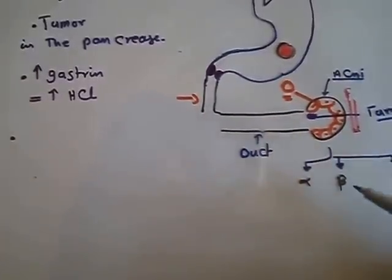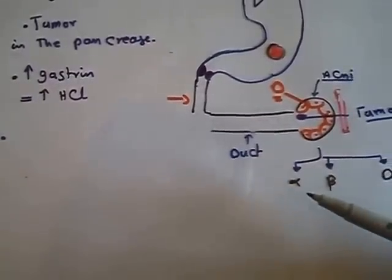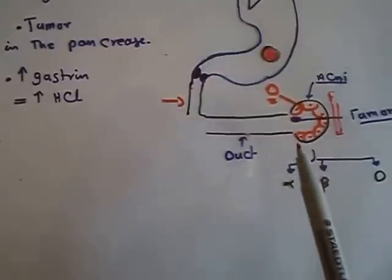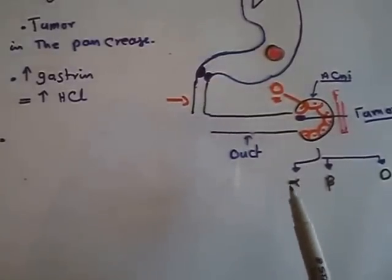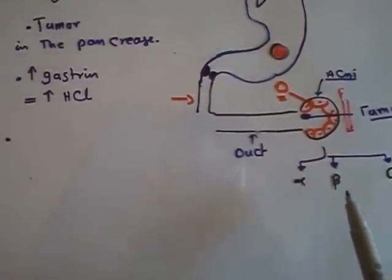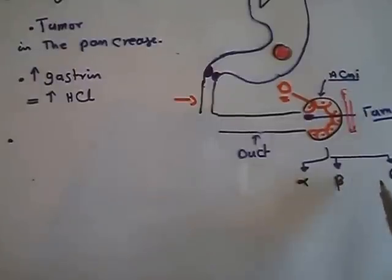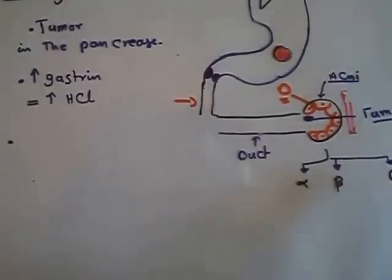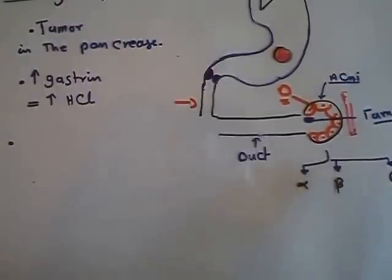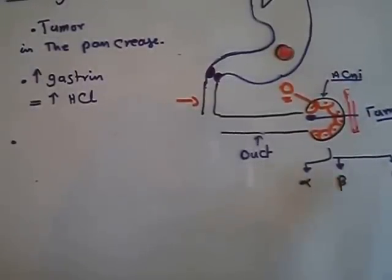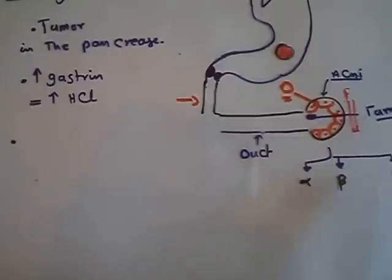We know that the pancreas contains three different types of cells: the alpha cells producing glucagon, beta cells producing insulin, and the delta cells producing somatostatin. The delta cells in embryonic life were producing gastrin.